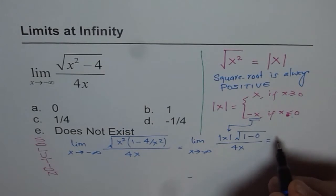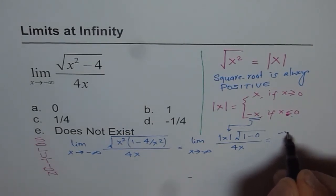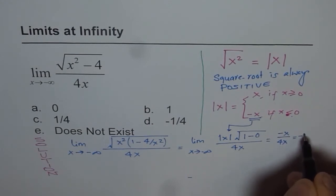And therefore, what we get here is minus x over 4x, and our answer is minus 1 over 4.